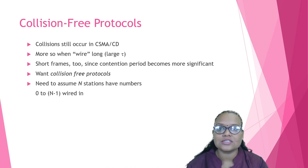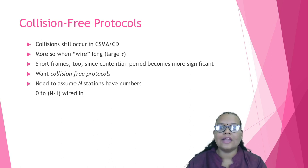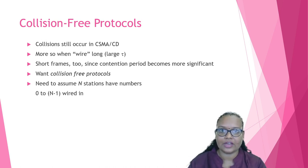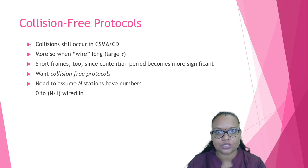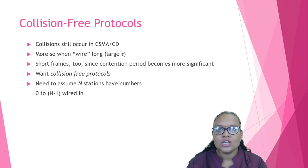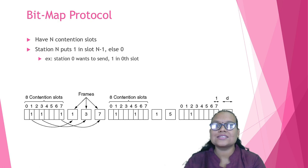Some requirements in collision-free protocols: it is more efficient when the wire or bit is long and the contention period is small, and when the frames are small. For collision-free protocols, we assume there are total N stations and N contention slots, with bits numbered from 0 to N minus 1.